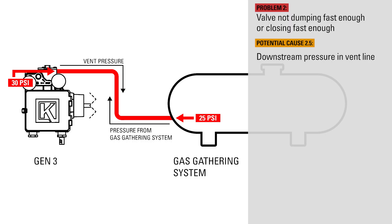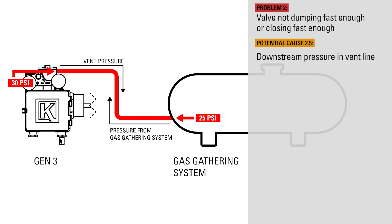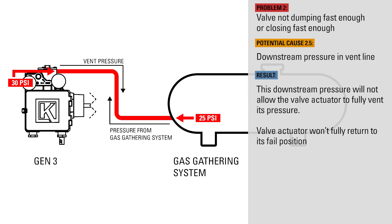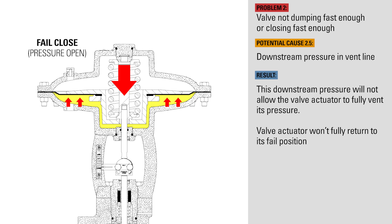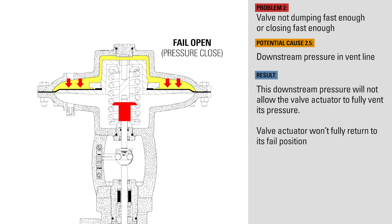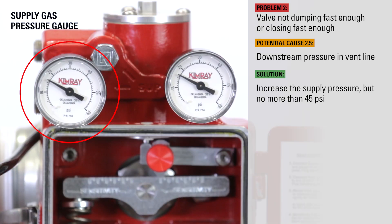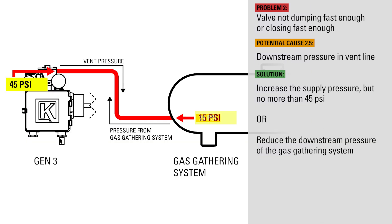If there is pressure downstream in the vent line due to a gas gathering system, the venting rate could be slower than normal because it's having to push against the downstream pressure as it exits the controller. Additionally, this downstream pressure will not allow the valve actuator to fully vent its pressure. If connected to a fail closed valve, there's a possibility the valve won't close fully if the actuator spring doesn't have enough force to act against the remaining pressure. For the same reason, a fail open valve might not be able to open fully. Increase the supply pressure, but no more than 45 psi, or reduce the downstream pressure of the gas gathering system.